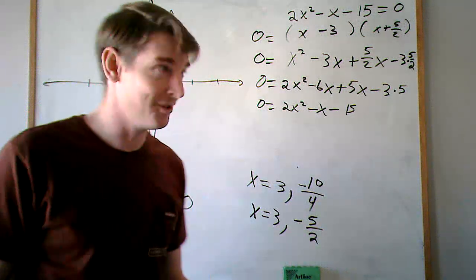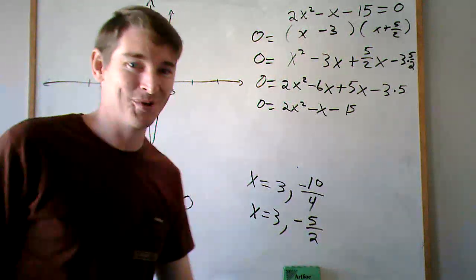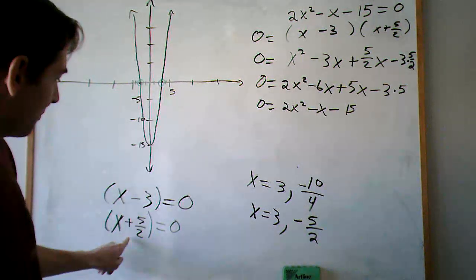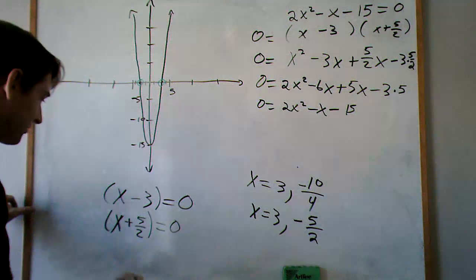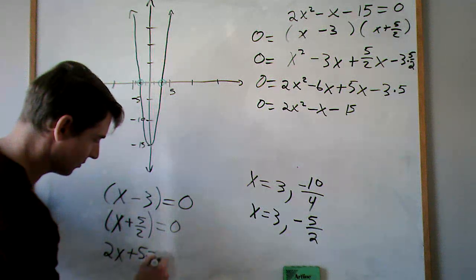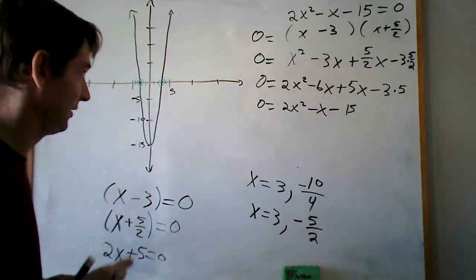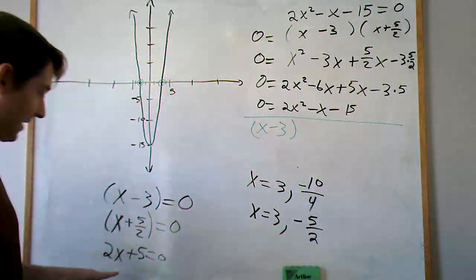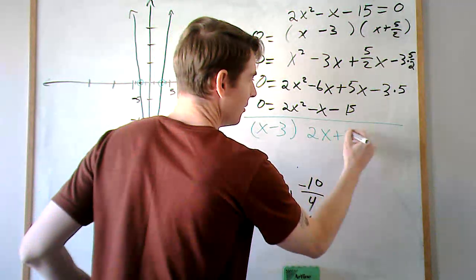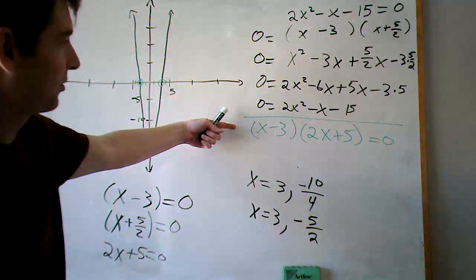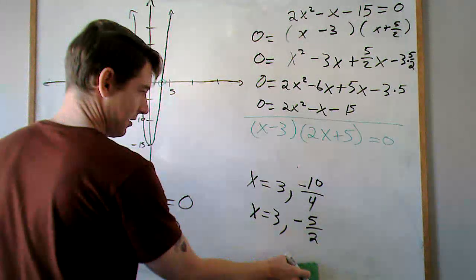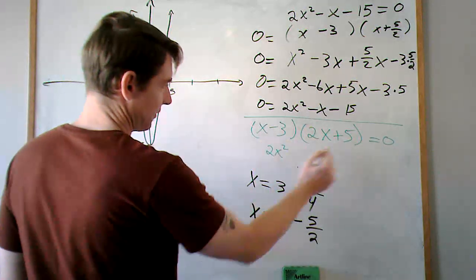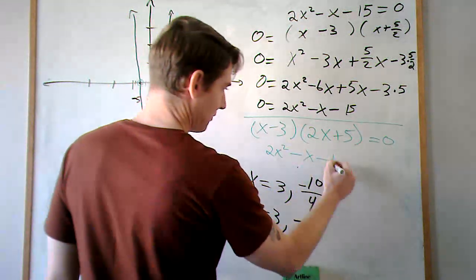Interesting side note — this doesn't look really cool. We can make it look really cool. What we're going to do is take this x plus 5 halves and change it — we can multiply both sides of this equation by 2. So we end up with 2x plus 5 equals 0. So now I'm going to make a new claim: if we take x minus 3 and multiply it by 2x plus 5, and distribute, we get 2x squared plus 5x minus 6x, which is minus x, minus 15. Look at that — it works.